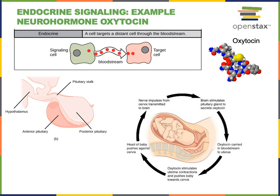Neurohormones are hormones that are secreted by neurons. They are similar to neurotransmitters in that they are secreted by neurons, but instead of being secreted into a synapse and traveling only a short distance by diffusion, neurohormones are secreted into the bloodstream and can travel a long distance to reach target cells.